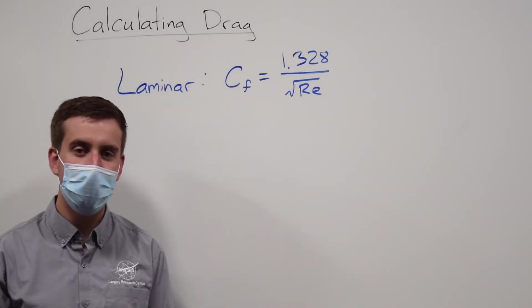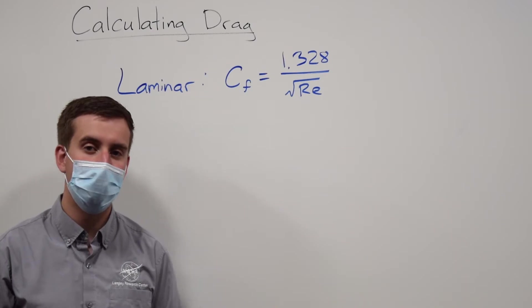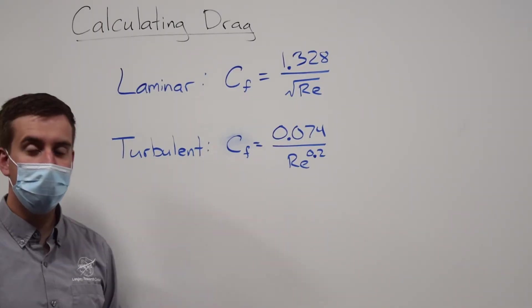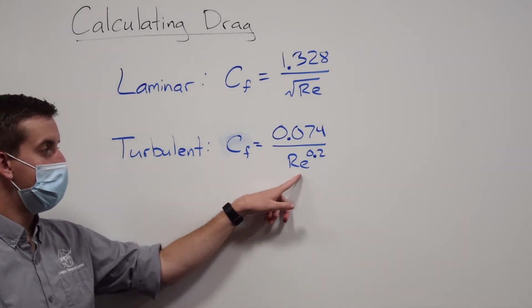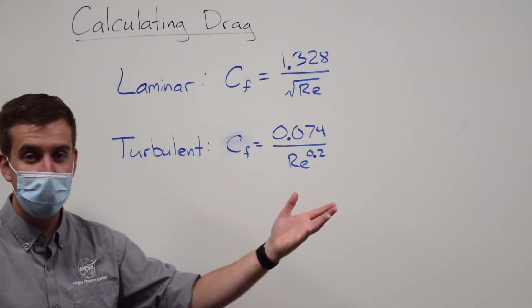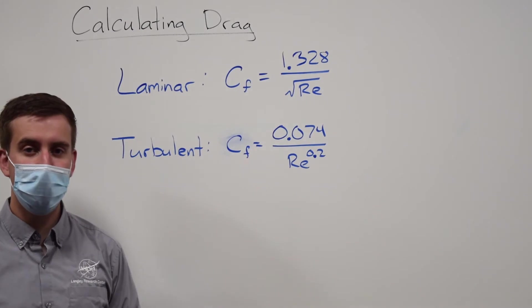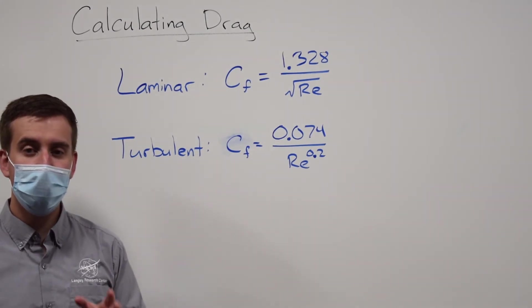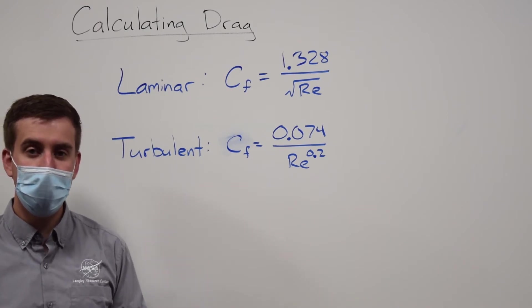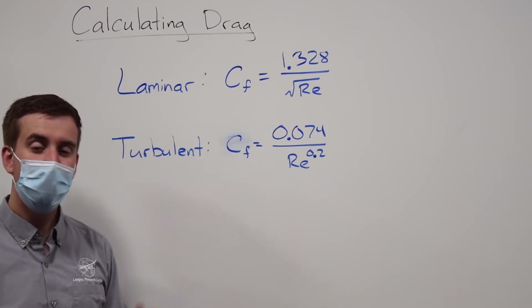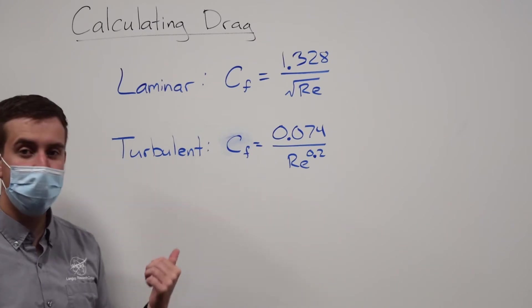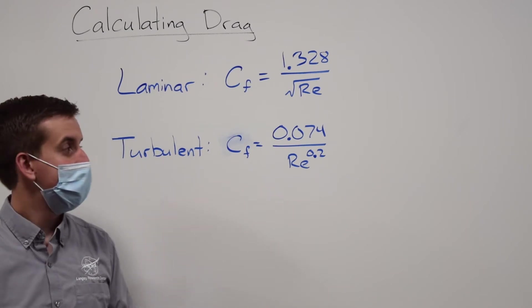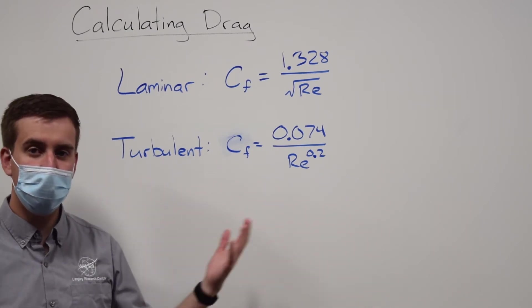However, if the airflow is turbulent, then we get a different equation for the skin friction drag coefficient. For turbulent airflow, our skin friction coefficient actually depends on 0.074 and the Reynolds number raised to the 0.2 power. Having turbulent versus laminar airflow can imply different trade-offs for your airplane. Turbulent airflow will actually have a greater skin friction coefficient, and you probably supposed that.